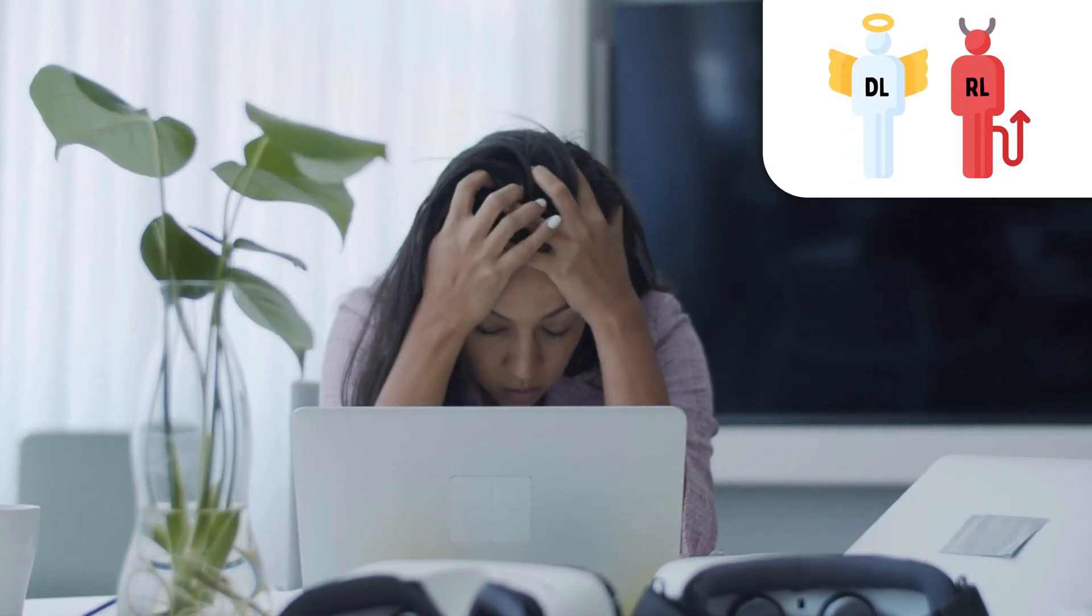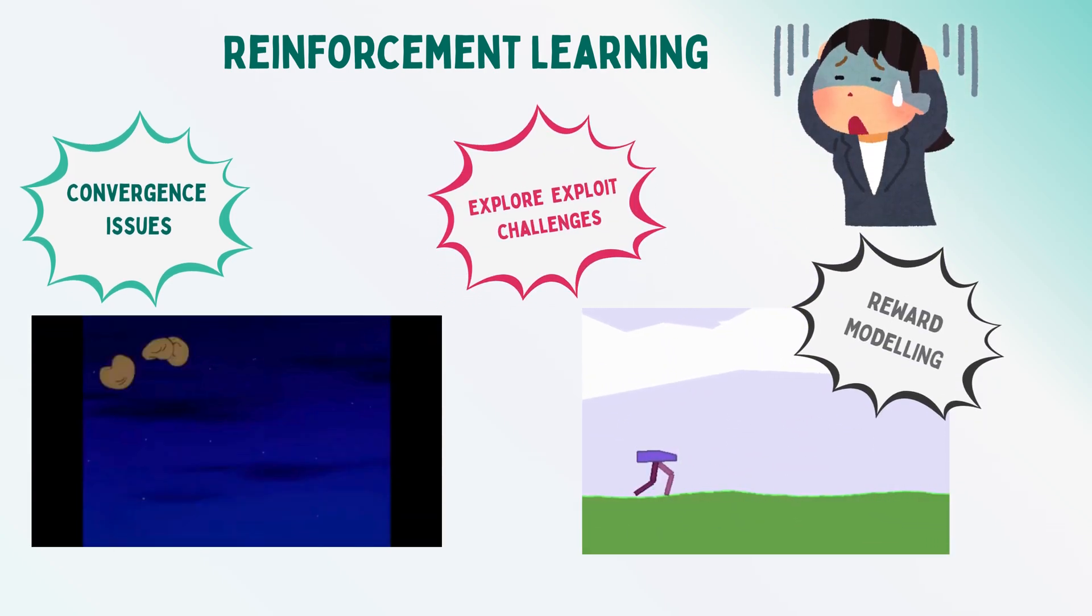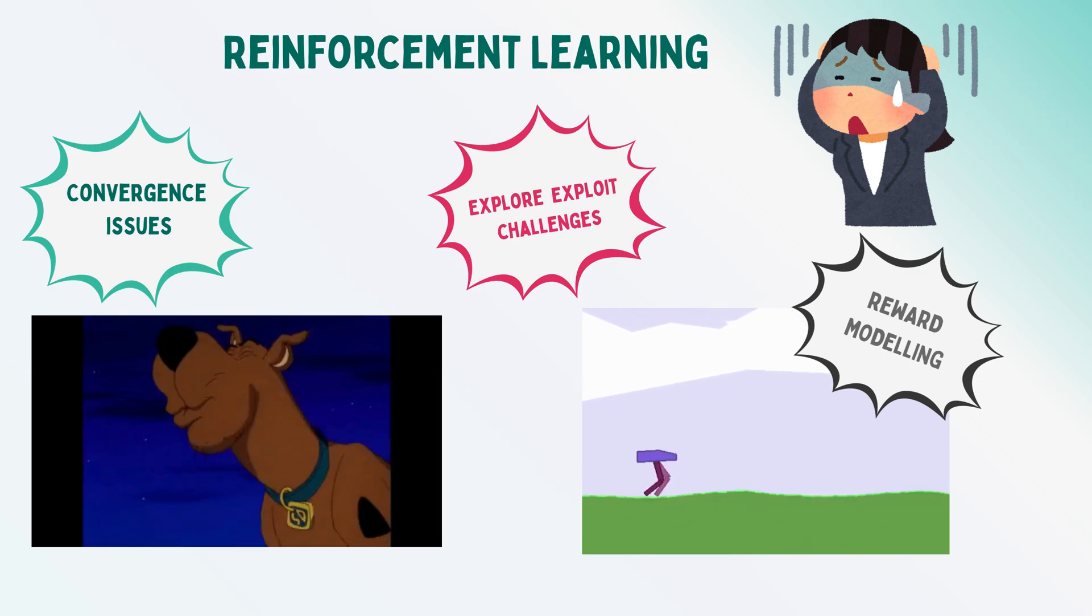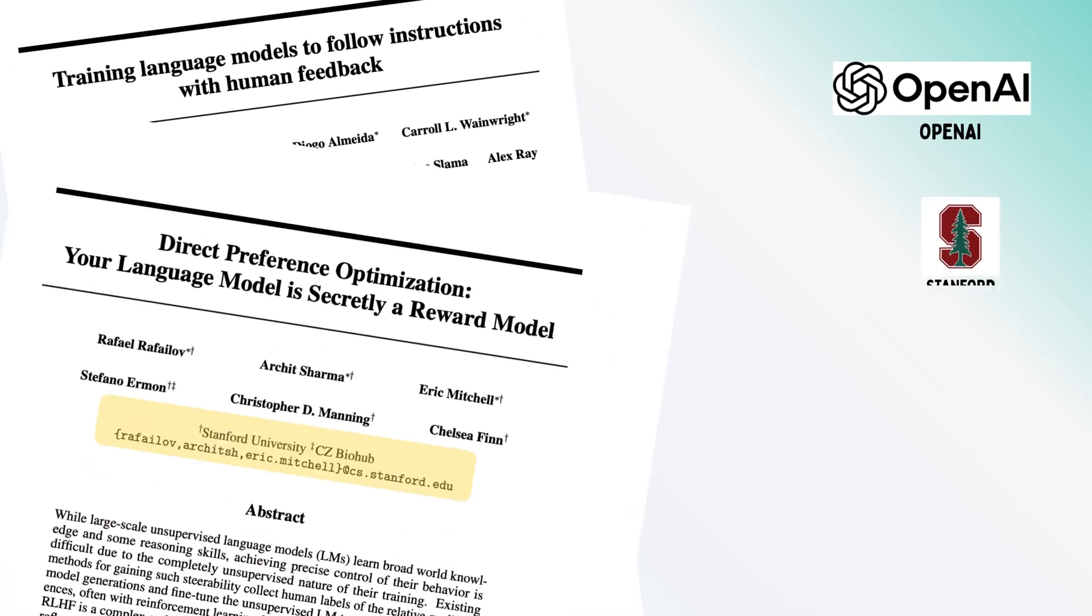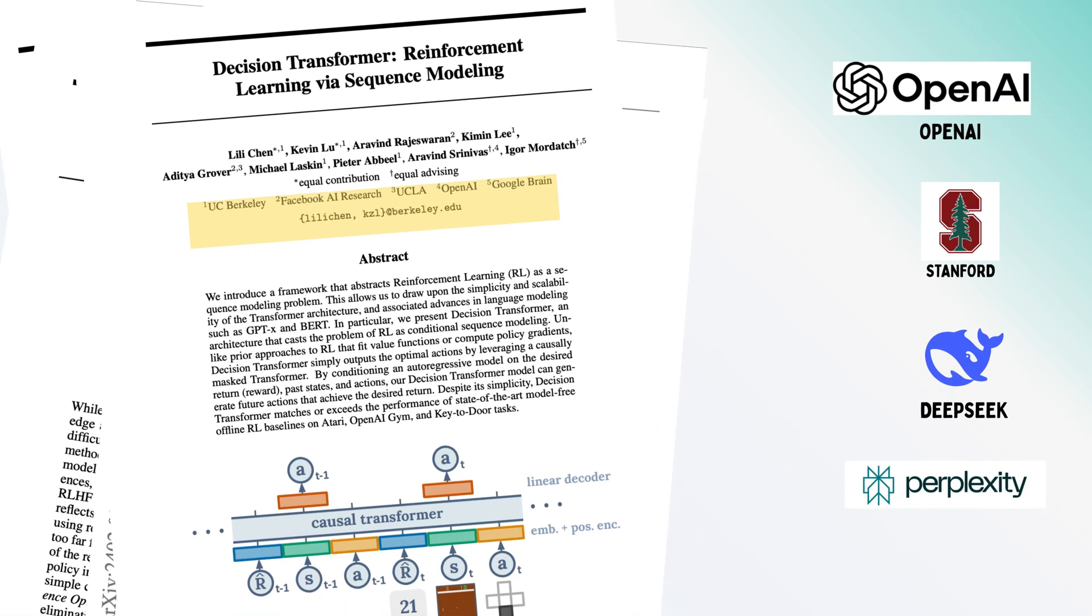What's strange about RL: no one was interested in using it because of many problems like convergence issues and ensuring proper reward modeling. Suddenly everyone is using it—OpenAI, Anthropic, or any LLM-based company.